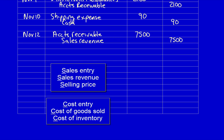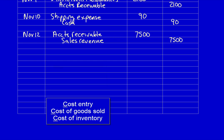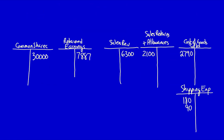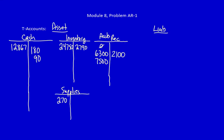That was the sales entry at the selling price. Now we need the cost entry. What did we get? The use of inventory to help generate revenue — that's an expense: cost of goods sold $4,500. What did we give away? Inventory, reduced by a credit. T-accounts: accounts receivable increases $7,500, sales revenue increases $7,500, cost of goods sold increases $4,500, inventory decreases $4,500.